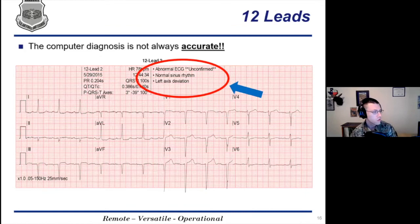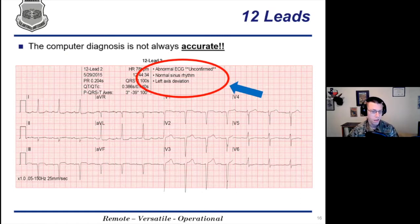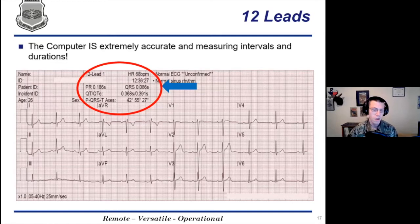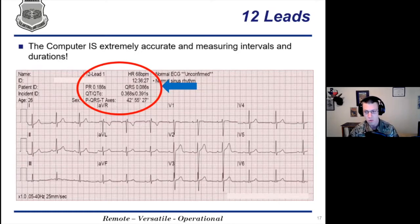Now we're going to start into our 12 leads. The most important thing to know is that the computer-generated diagnosis is not very accurate — we've probably all seen cases where it's called out STEMIs or other conditions that just weren't there. However, the measurements to the left of the diagnosis on most EKG strips — heart rate, QRS duration, PR interval — are extremely accurate and super helpful when we discuss the other conditions we'll cover today.